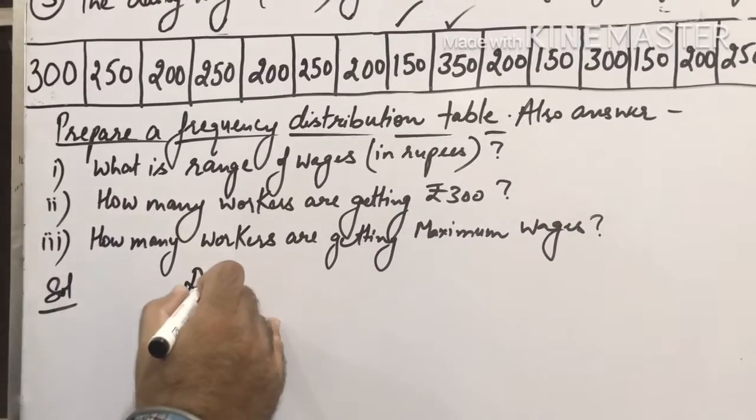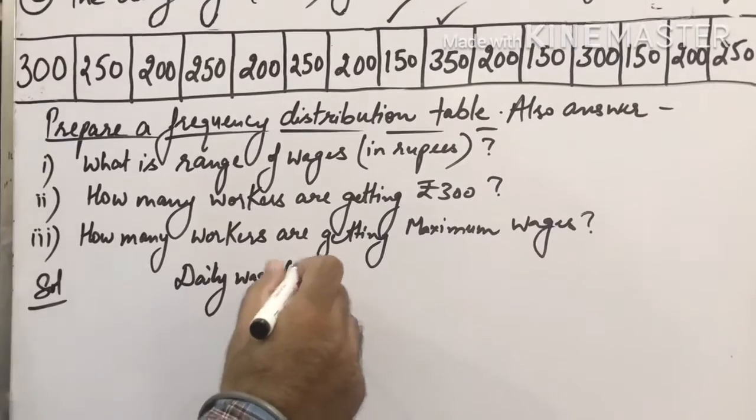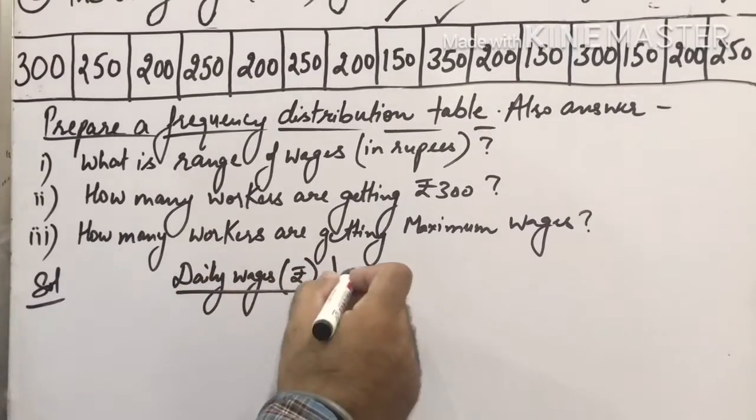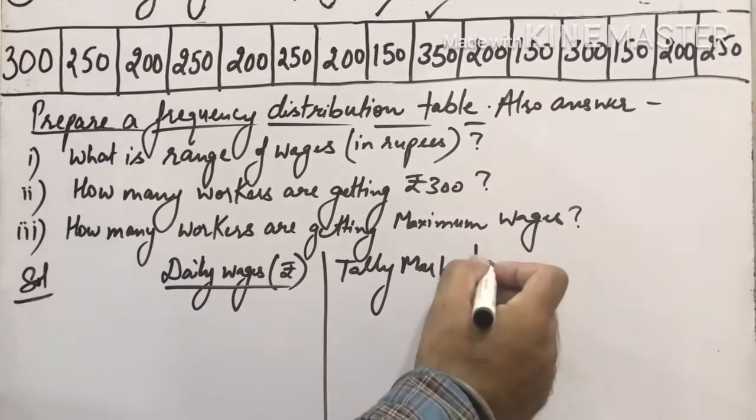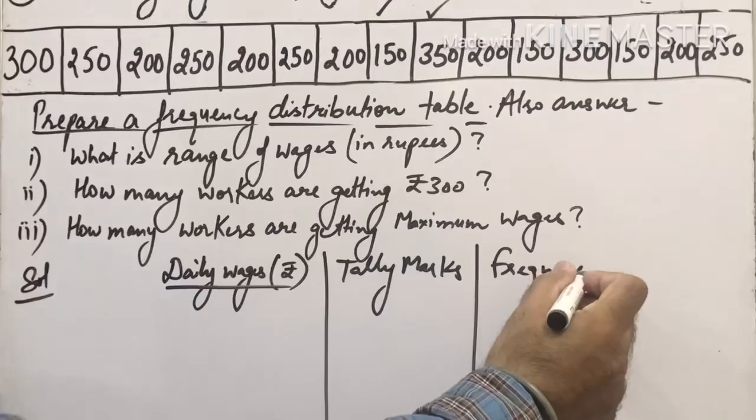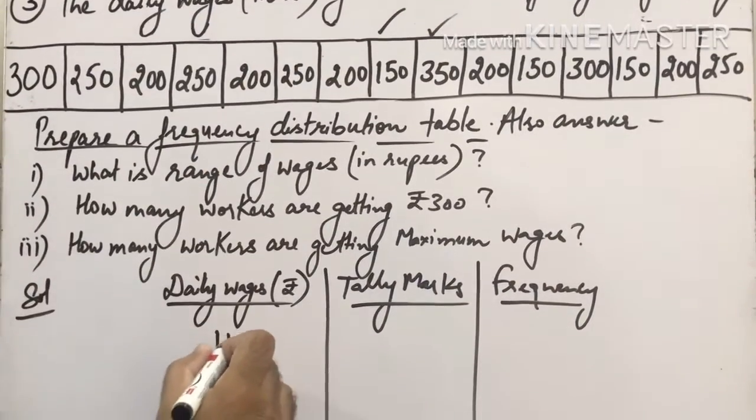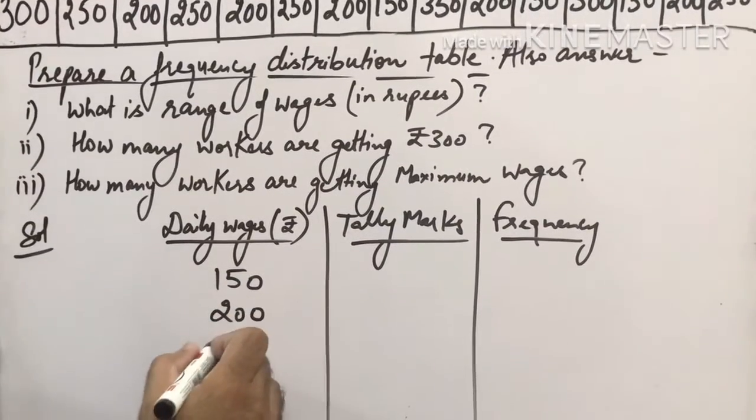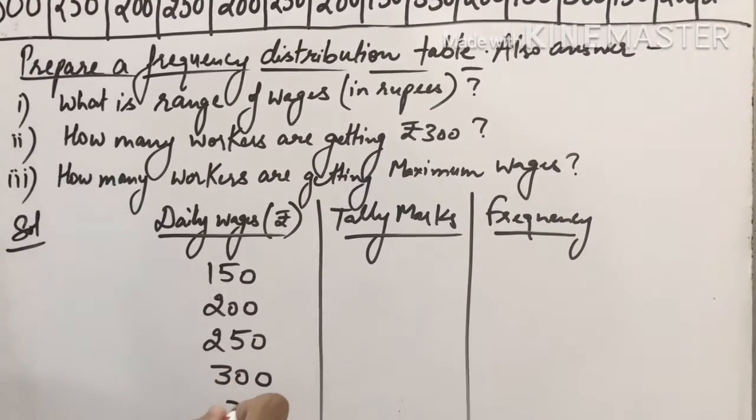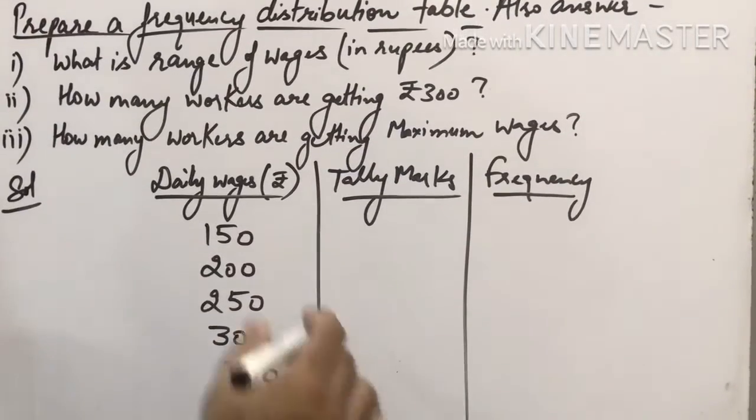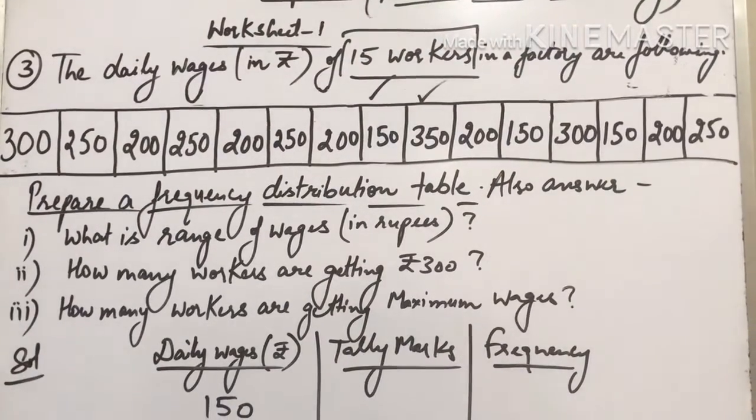Let's say the first column will be daily wages, which is in rupees. Then the second column will be of tally marks, and third for the frequency, exactly like the first question. Daily wages minimum is 150, then 200, writing in order, then 250, then 300, and then 350. So total how many workers are there? 15. That means your frequency total should be 15.